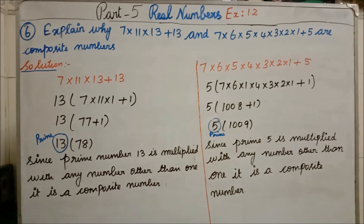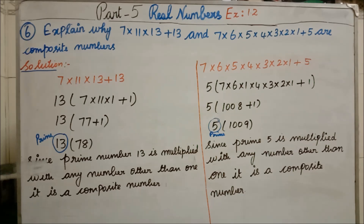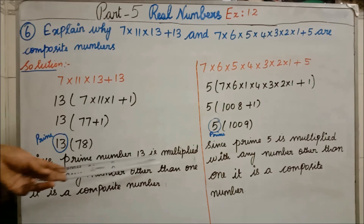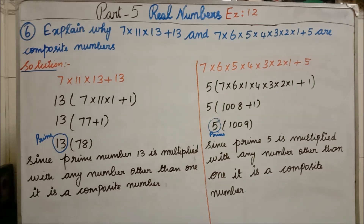Since prime number 13 is multiplied with a number other than 1, it is a composite number. This concept we learned in part 4 video: any prime number, if you multiply it with any other number — not 1 — you will get a composite number. Here, 13 is a prime number multiplied by 78, which is a composite number.